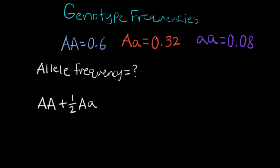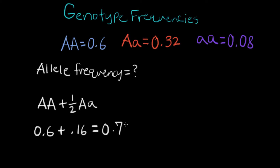When we're calculating the allele frequency, we take the genotype frequency 0.6 of the homozygous dominant plus half of the heterozygous genotype frequency, which is 0.16. So this is going to give us an allele frequency of 0.76. This is the allele frequency for the big A allele.